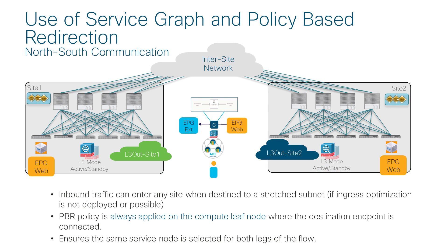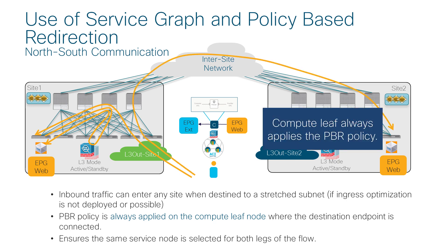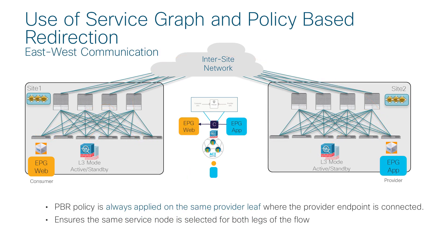This is a north-south traffic flow example. We have a web EPG stretched across sites. A contract is configured between the web EPG and L3 out EPG. Each site has a local L3 out and service node. Incoming traffic arrives at either site 1 or site 2 depending on routing design. For intra-VRF north-south L3 out to EPG contracts, policy is always applied on the compute leaf where the web endpoint is connected, and the leaf uses the PBR destination in the same site. So regardless of whether traffic arrives from the local or remote L3 out, the service device where the destination endpoint is located will be used.